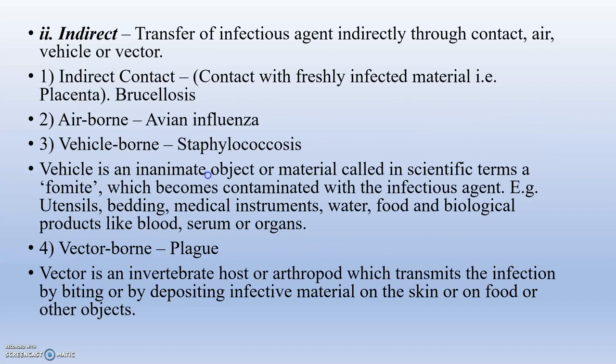Indirect transmission is the transfer of an infectious agent indirectly through contact, air, vehicle, or vector. Indirect contact — such as contact with freshly infected material like placenta — can cause brucellosis. Airborne transmission can cause avian influenza. Vehicle-borne transmission involves inanimate objects called fomites — such as a bed, bucket, water, medical instruments, or serum — and is associated with staphylococcus. Vector-borne transmission includes plague, trypanosomiasis, and leishmaniasis.